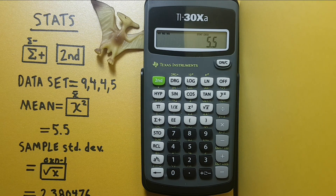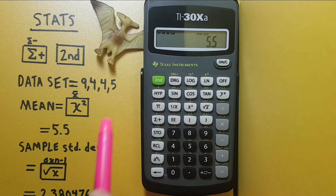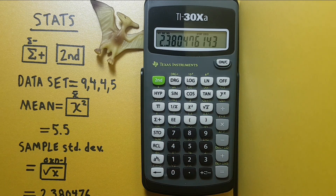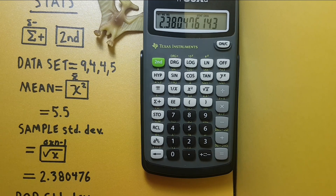If we want the sample standard deviation we press second function, and then the root key with the sigma x n minus 1. This gives us a sample standard deviation of 2.380476143.